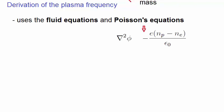The derivation of the plasma frequency uses the fluid equations and the Poisson equation, which is given by this expression. We also assume that we're dealing with cold electrons, so their thermal energy, kT, is zero. Because the ions are so much more massive than the electrons, we assume that they are fixed in space.